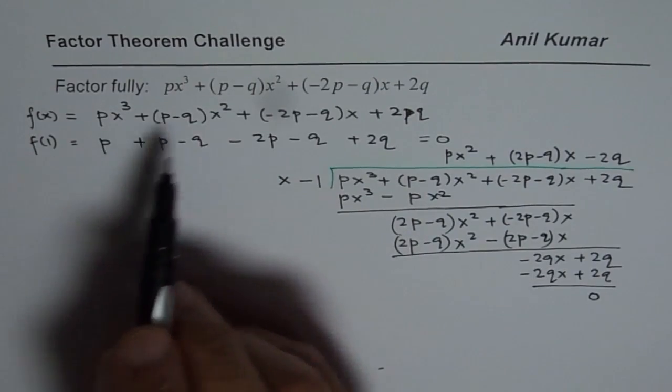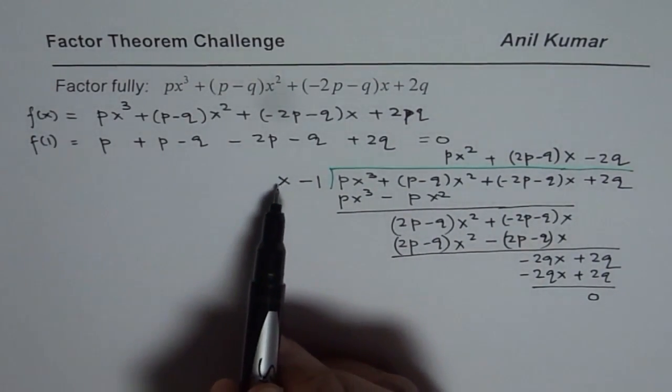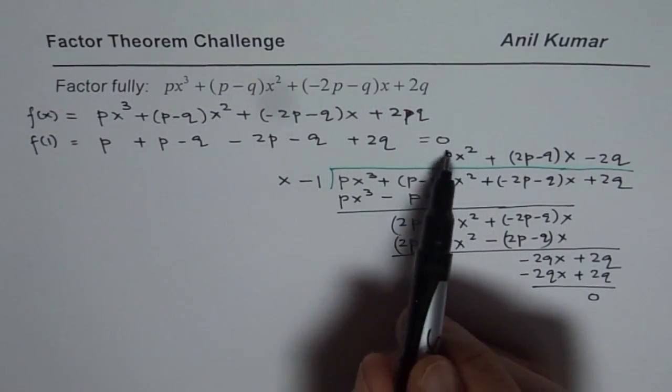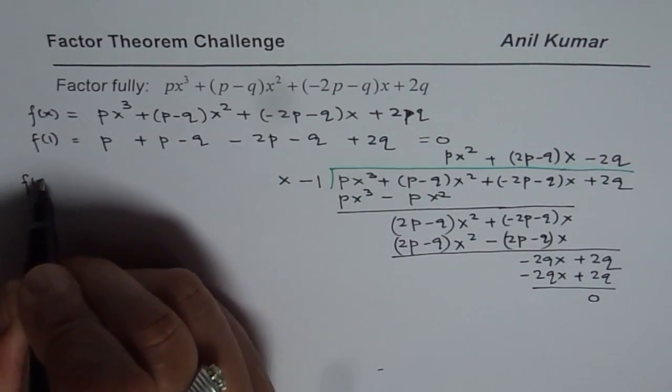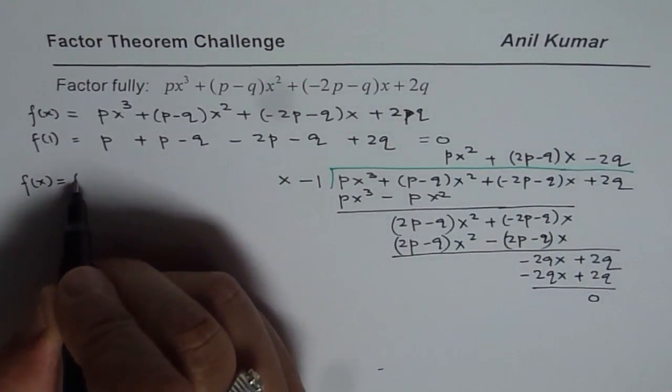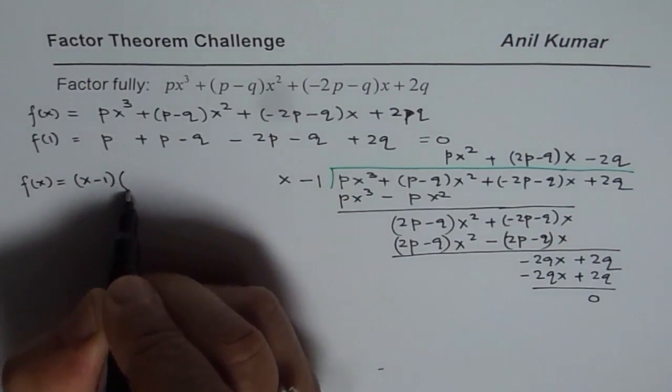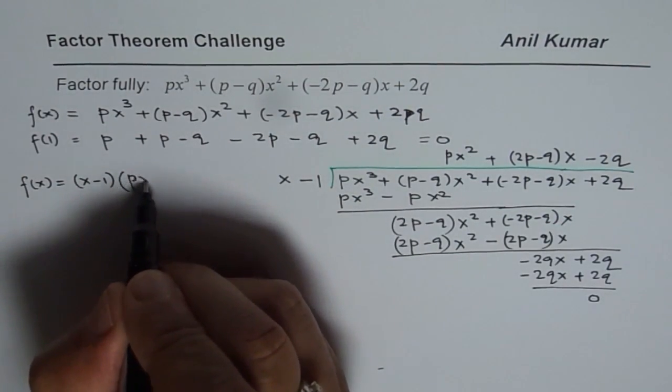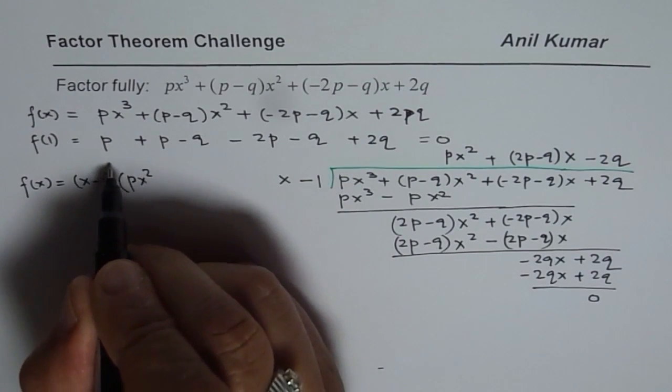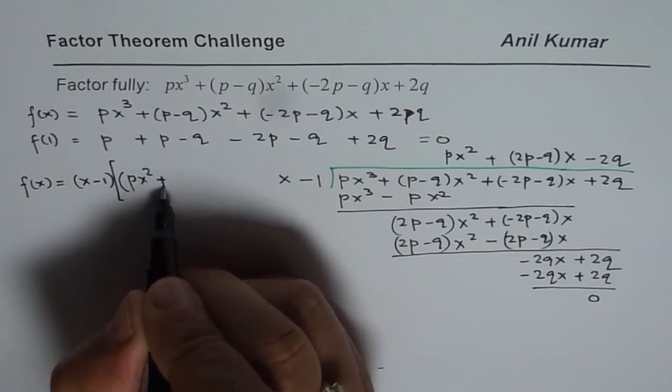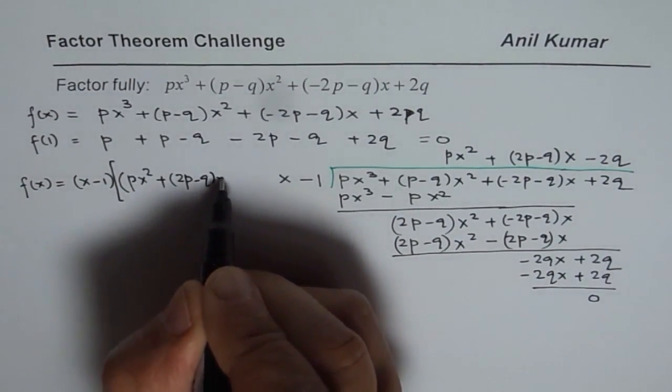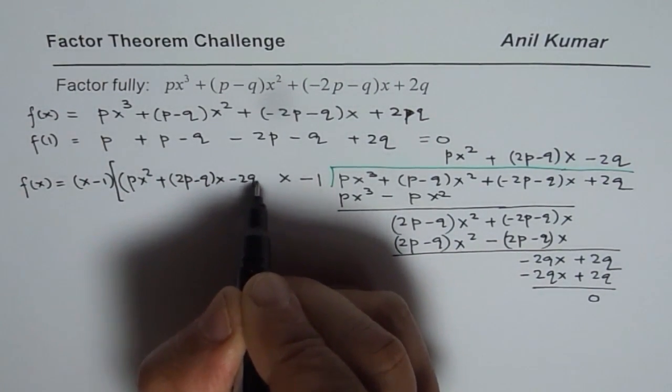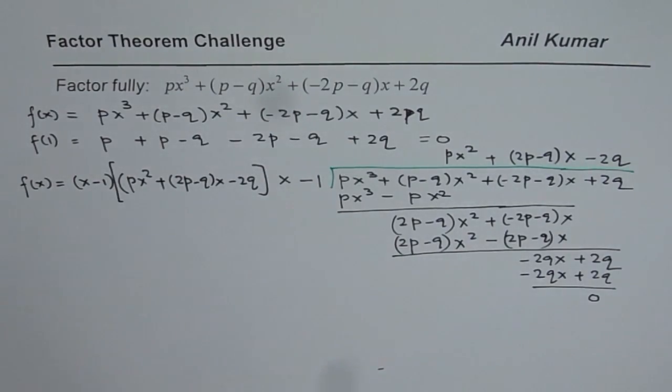So we get -2qx + 2q. We can now multiply this by -2q. So -2q gives us -2qx and minus times minus becomes +2q, and the remainder is 0. So we could write this function as x-1 times all this.